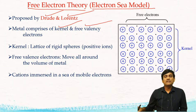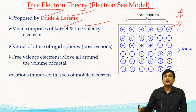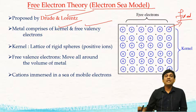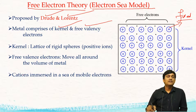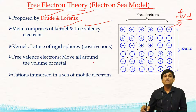According to this theory, there is no movement of positively charged ions. The position of positively charged ions is fixed — the kernel is static. But the valency electrons, the free electrons, are mobile and they can move throughout the volume of the metal. So according to the electron sea model, cations are immersed in a sea of mobile electrons.